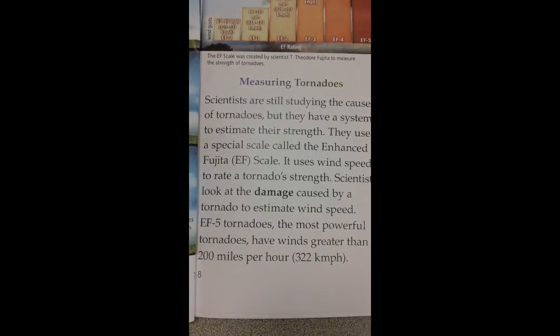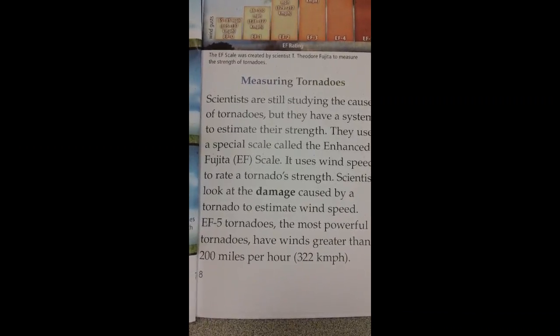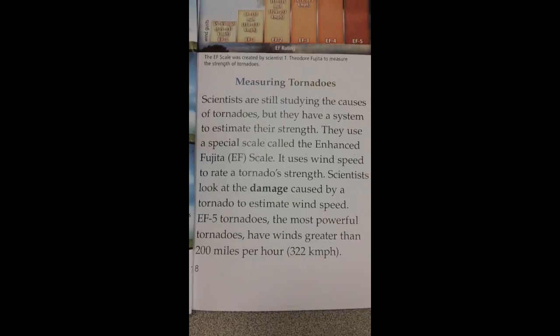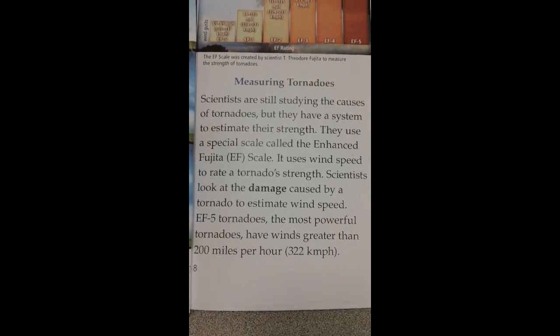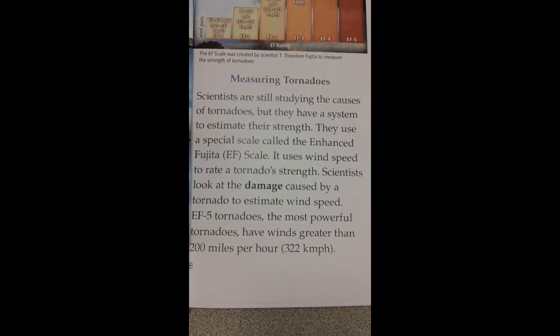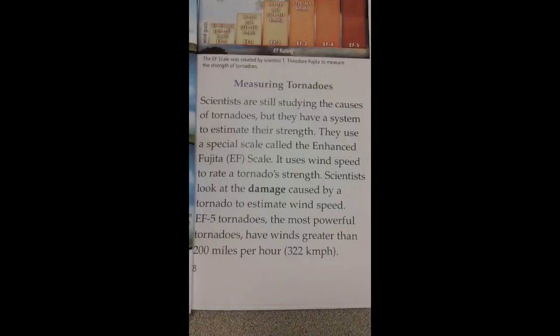Scientists use the Enhanced Fujita (EF) scale, which uses wind speed to rate tornado strength. They look at the damage caused by a tornado to estimate wind speed. EF5 tornadoes, the most powerful, have winds greater than 200 miles per hour.